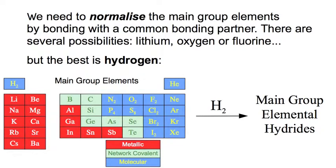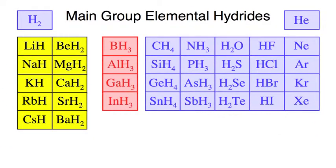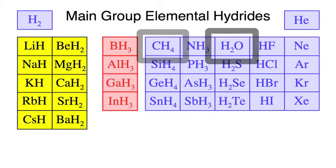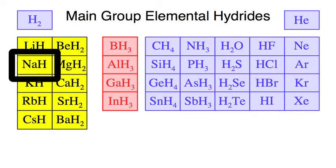We're going to take the main group elements and react them with hydrogen to produce the main group elemental hydrides. The main group elemental hydrides are often extremely common chemical entities — for example, hydrogen H2, water H2O, methane CH4, ammonia NH3, hydrogen chloride HCl, and sodium hydride NaH.